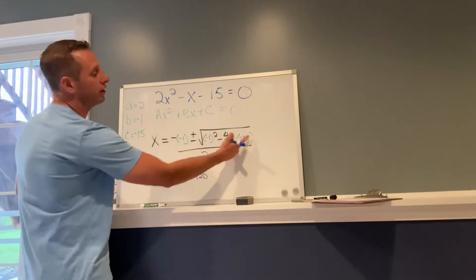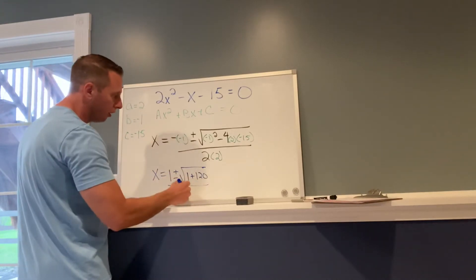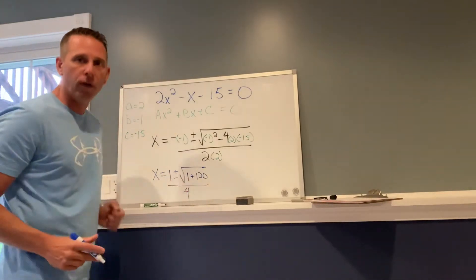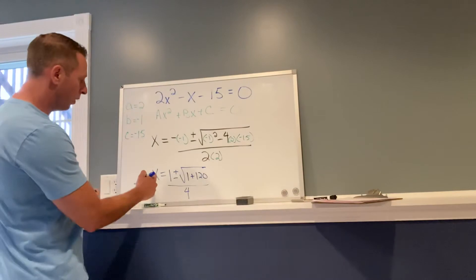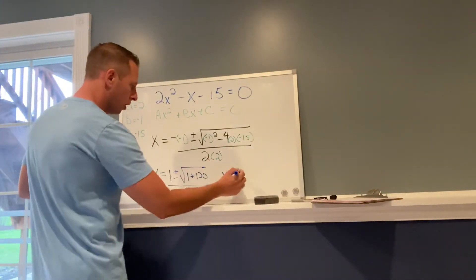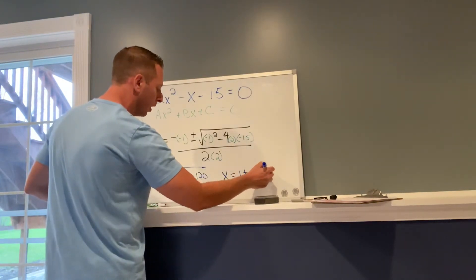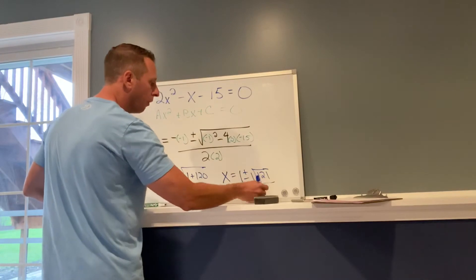Again, just order of operations. I did the multiplication, I did the exponents, and now I'm adding it together. All of that over 4. So what happens here is this becomes x equals 1 plus or minus the square root of 121 over 4.